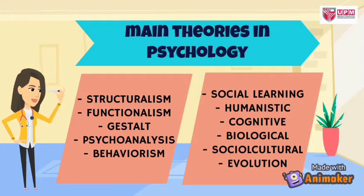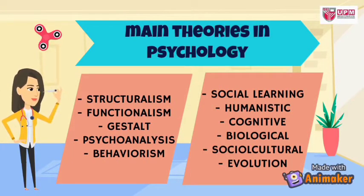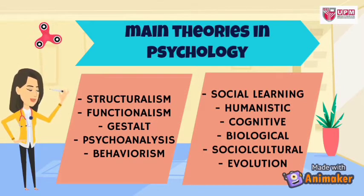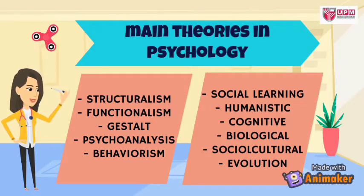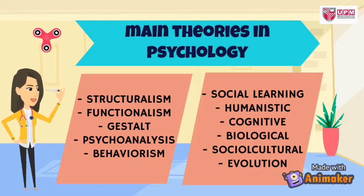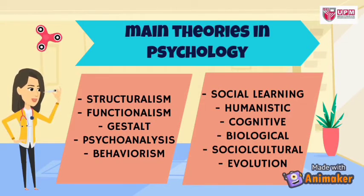The list of the main theories in psychology: 1. Structuralism, 2. Functionalism, 3. Gestalt, 4. Psychoanalysis, 5. Behaviorism, 6. Social Learning, 7. Humanistic, 8. Cognitive, 9. Biological, 10. Sociocultural, and the last one is Evolutionary Psychology.